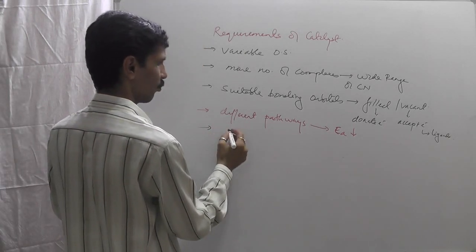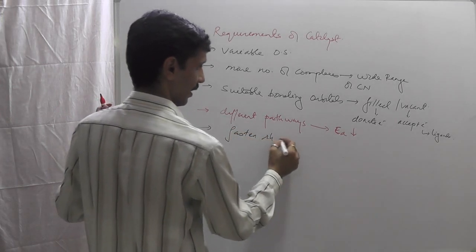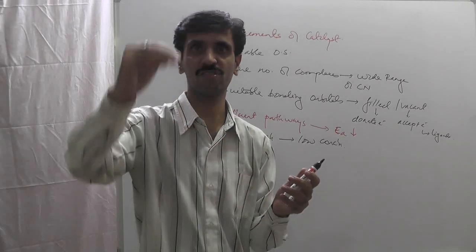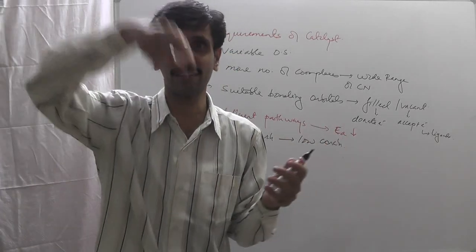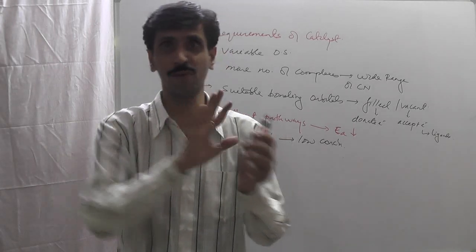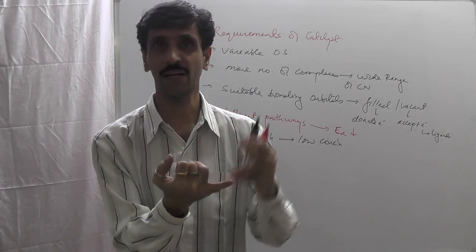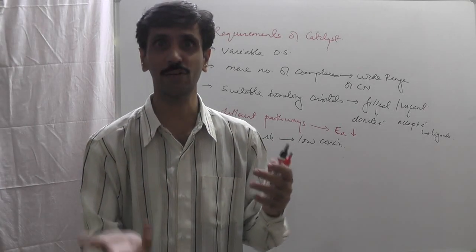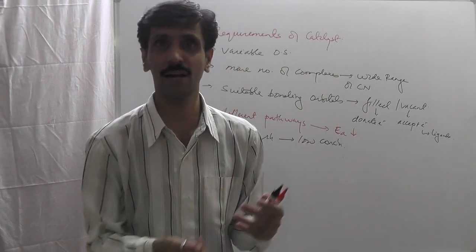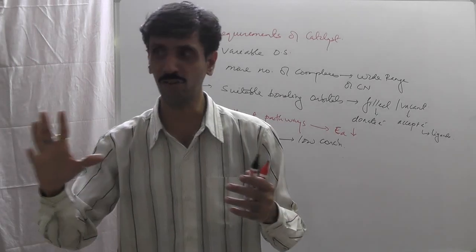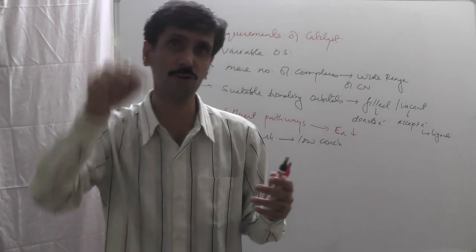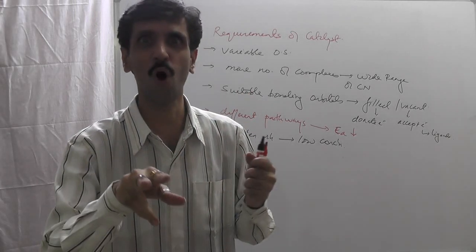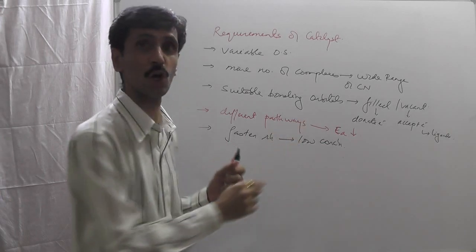Number five: it should have an ability to speed up the reaction — fasten the reaction — even at low concentrations. Sometimes reactions do become fast, but at the expense of using large amounts of reactants. Industries won't want that because they are cost-effective: income has to be more, expenditure has to be less. Buying more reactants means more expenditure. So the catalyst should be a substance that increases the rate of reaction but with a small amount of reactants — faster reaction at lower concentration.